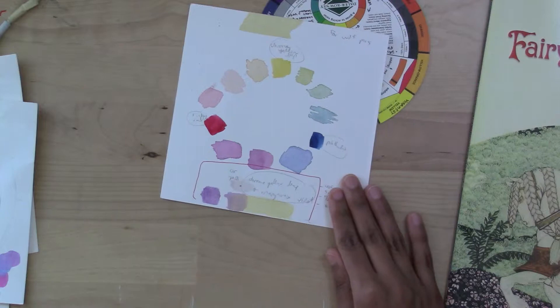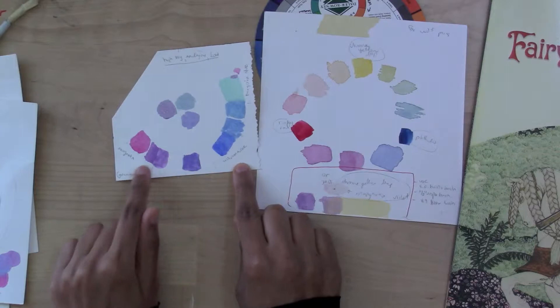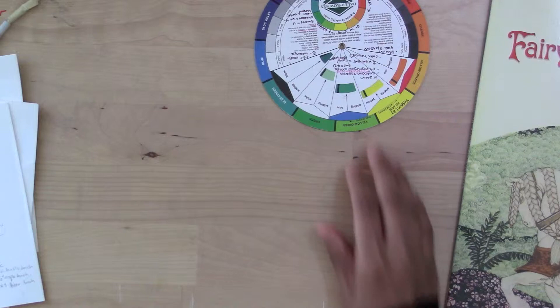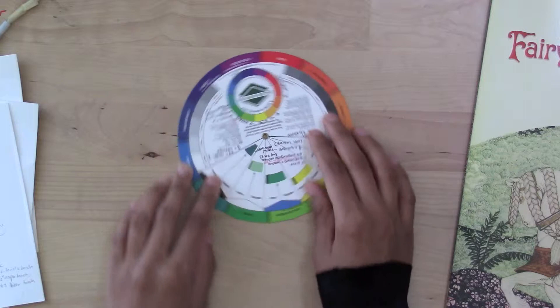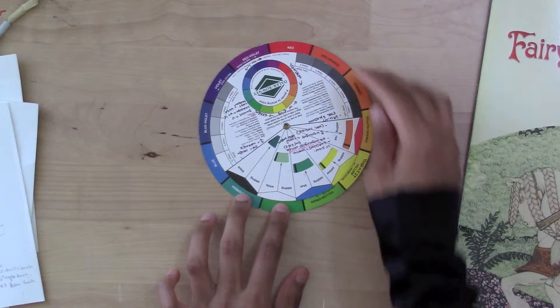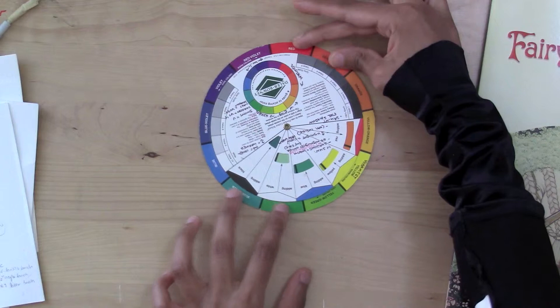We have experimented in previous videos with complementary, which is two colors on the opposite side of the wheel, or analogous, colors next to each other on a wheel. Today we're going to experiment with an adjacent complementary tetrad, which is basically two pairs of complements. In this case, I'm going to use green and blue-green, and red and red-orange. On an alternative color wheel, instead of it being red and red-orange, it's actually magenta and red, which is what I'm going to use.